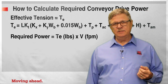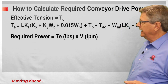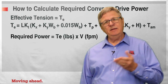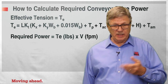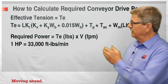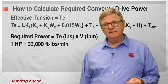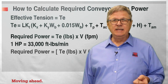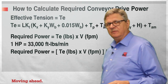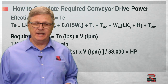Once we know effective tension, we can calculate the power required to drive the conveyor. Required power equals effective tension times belt speed — TE times V — where TE is expressed in pounds and V is expressed in feet per minute. We know that one horsepower equals 33,000 foot-pounds per minute, so horsepower equals TE times V divided by 33,000.